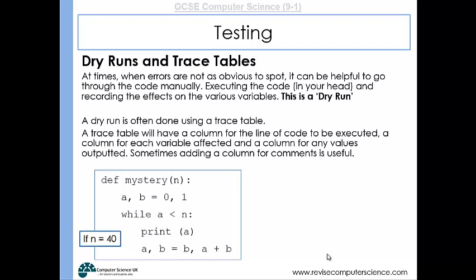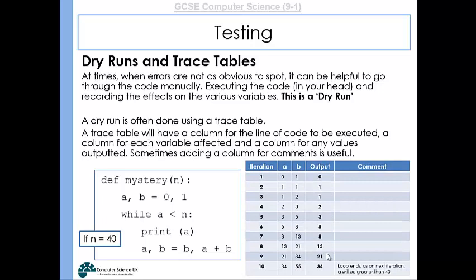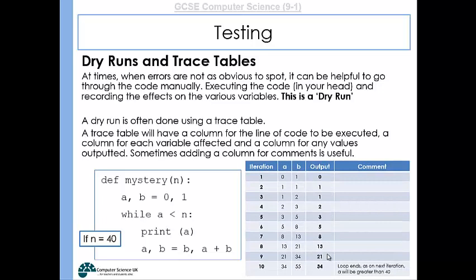So what we do is we draw up a trace table, which has got the iteration number, so we can trace this while loop. We've got the values of a and b, columns for that. We've got a column for the output, and we've got a column for any comments that we want to make.